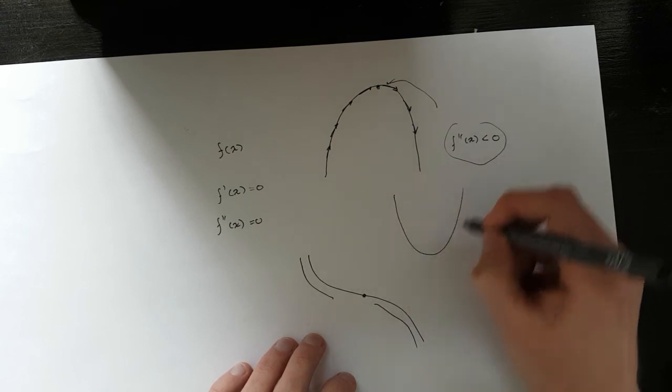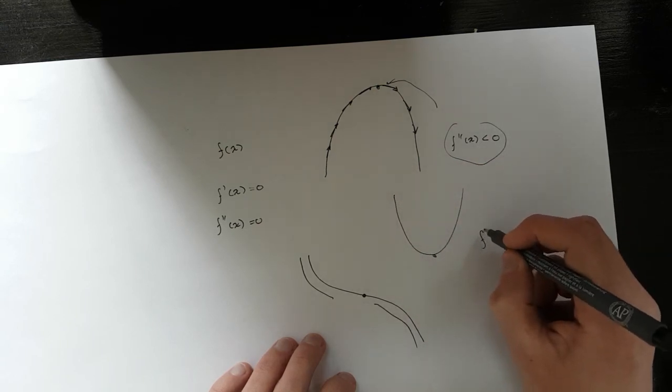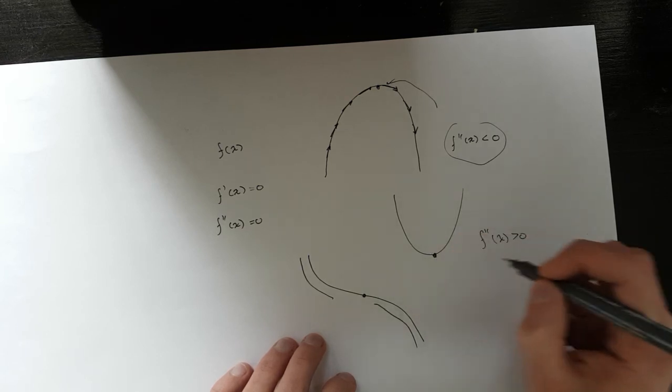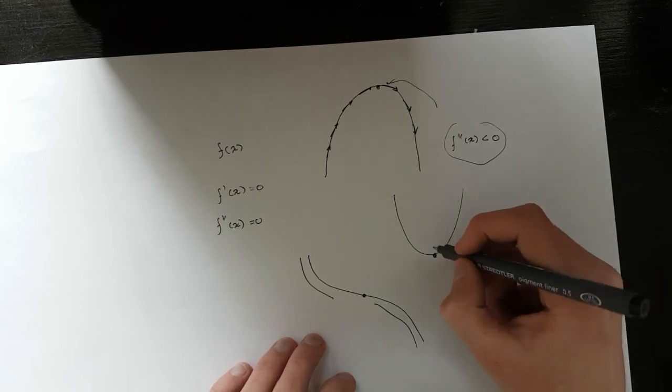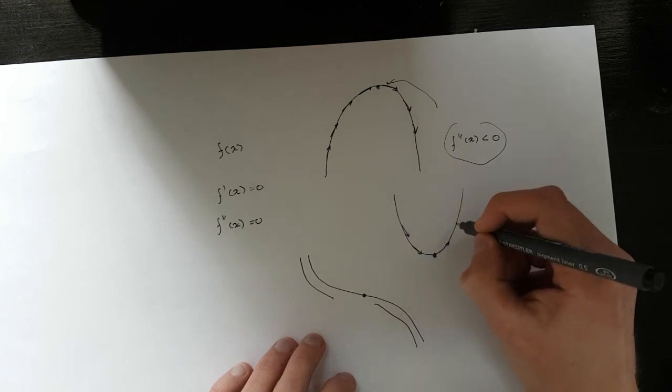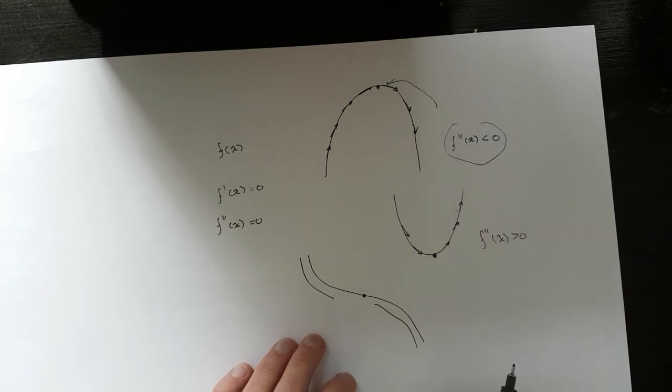Same if you have this and you took the second derivative of that and it was larger than zero, you would know that this is the minimum point because here they're increasing, the slopes. So that makes sense.